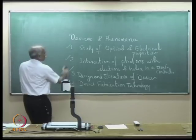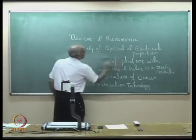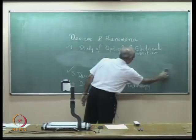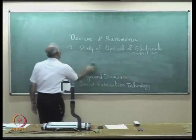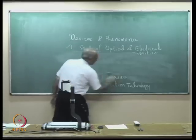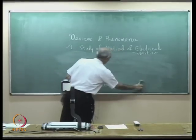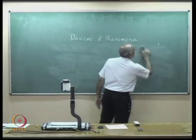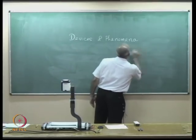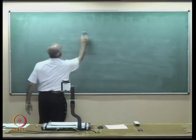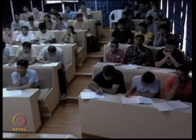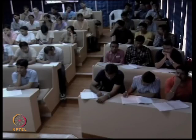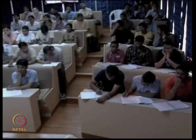So we start with the first aspect: optical and electrical properties of semiconductors. We start with the formation of energy bands — all of you would have studied about this, so I am just recalling the formation of energy bands in a semiconductor.